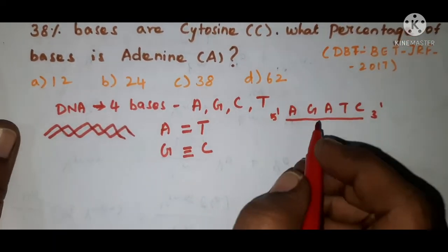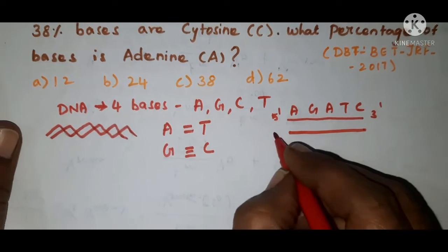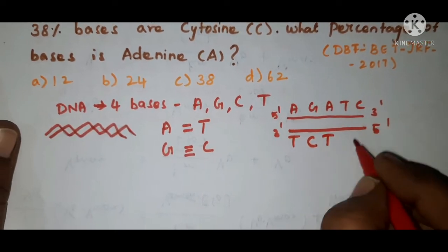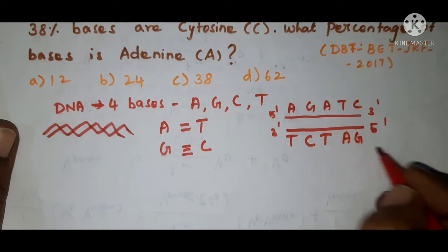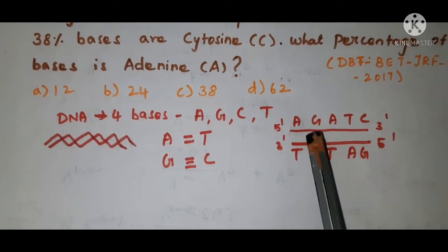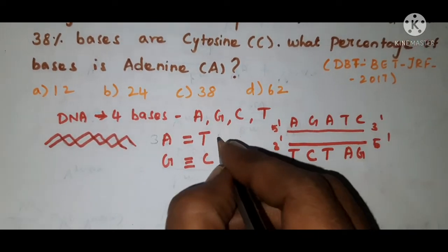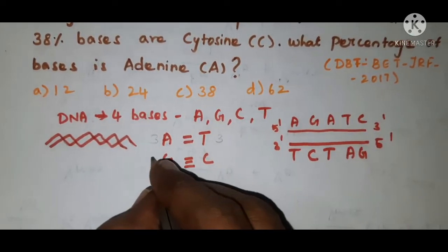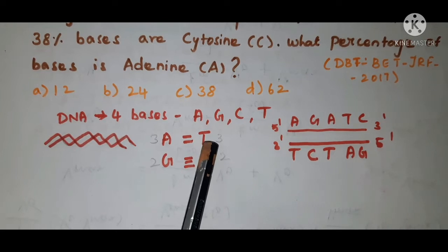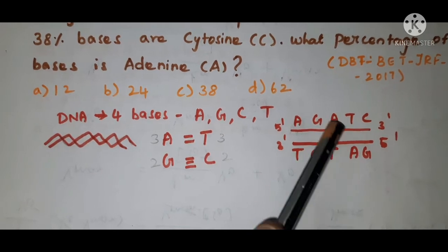If you consider a strand A, G, A, T, C, then the complementary strand for this strand is: A always base pairs with T, G with C, A with T, T with A, and C with G. So here you have three adenines and also three thymines. Like that you have two guanines and also two cytosines. That is, the number of A always equals the number of thymine, and the number of guanine equals the number of cytosine, because the two strands are complementary to each other.